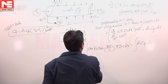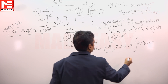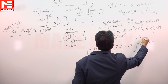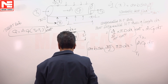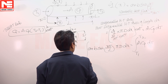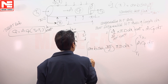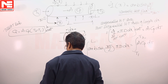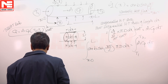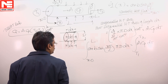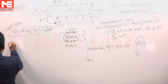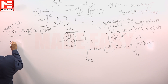Now I will integrate between the limits of inlet to exit. On the temperature side the limits are T1 to T2, and on the x side, x equals 0 at the inlet and x equals L at the exit.